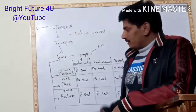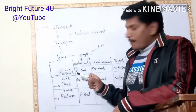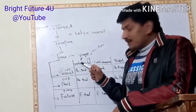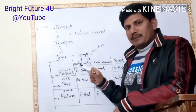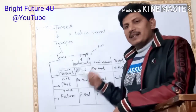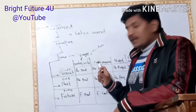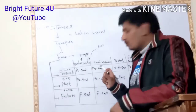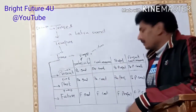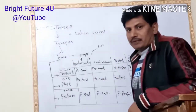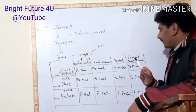The four substates are: first, indefinite — which means unclear; second, continuous; third, perfect; and fourth, perfect continuous.